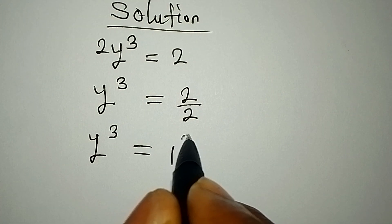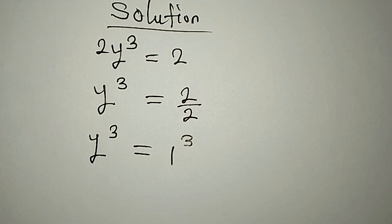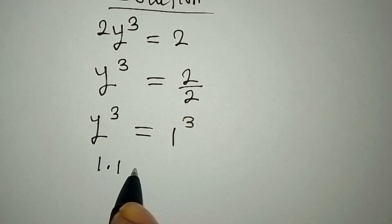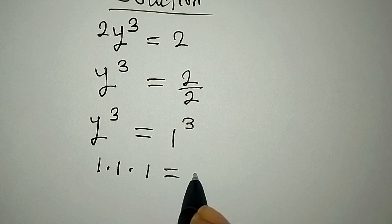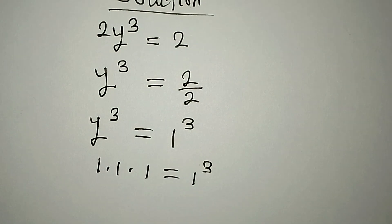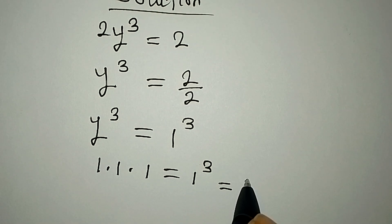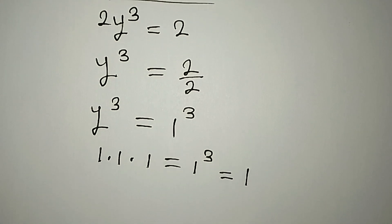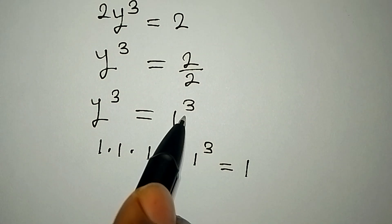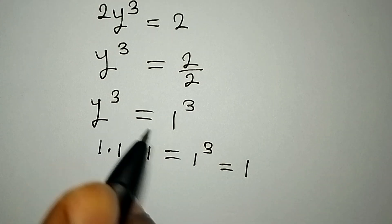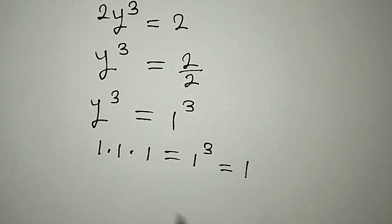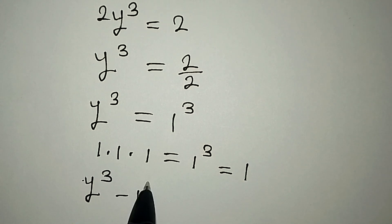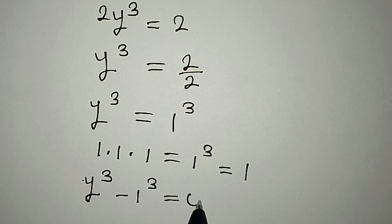We can equally make this have a power of 3. Remember that 1 multiplied by 1 multiplied by 1 is the same thing as 1 to the power of 3, which is equal to 1. So in place of 1, we can write 1 to the power of 3. Bringing this to the left-hand side, since we are looking for the three solutions, we get y to the power of 3 minus 1 to the power of 3 equals 0.